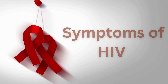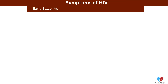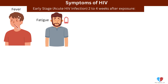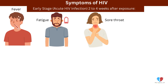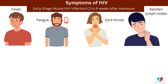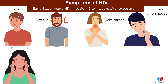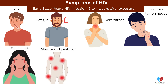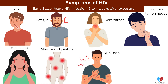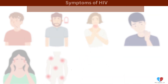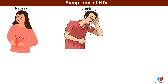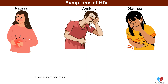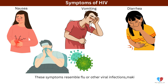Symptoms of HIV. Early stage — acute HIV infection, 2 to 4 weeks after exposure. Symptoms include: fever, fatigue, sore throat, swollen lymph nodes, headaches, muscle and joint pain, skin rash, night sweats, nausea, vomiting, or diarrhea. These symptoms resemble flu or other viral infections, making it difficult to recognize without testing.